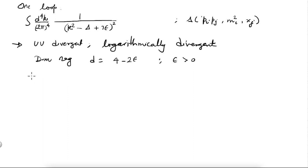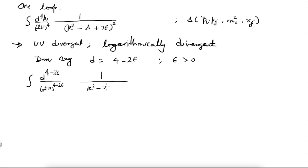With this, your integral becomes the regulated integral: d^(4−2ε)k over (2π)^(4−2ε), 1 over (k² − Δ + iε)². This integral is now convergent because the number of dimensions is less than 4. Let us evaluate this to see the explicit form of the singularity in the ε → 0 limit, or equivalently the d → 4 limit.